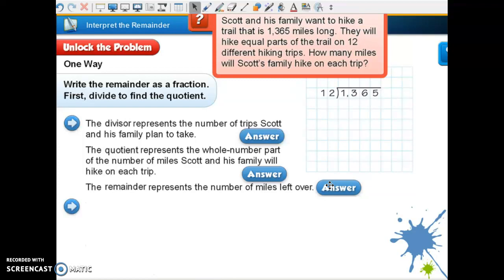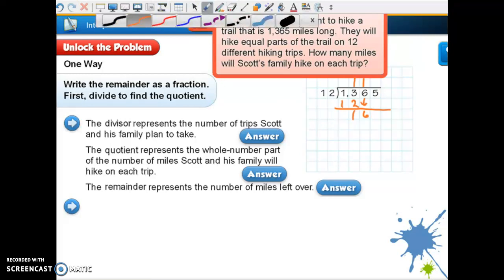So we need to go ahead and work this problem so we can talk about our remainder. So 12 goes into 13 one time. So I'm going to put a 1 above 13, and I'm going to subtract. And 13 minus 12 is 1. And I'm going to bring down my 6. 12 will go only going to 16 one time. So I'm going to put 12 under here, and again, I'm going to subtract. I'm going to bring down my 5.